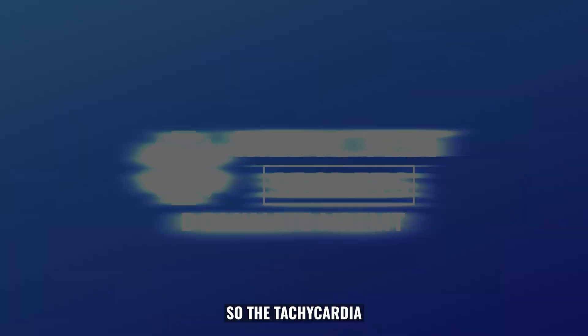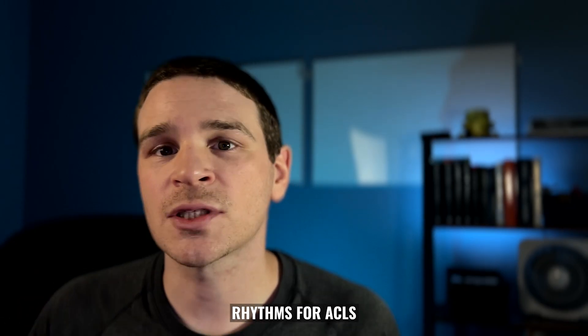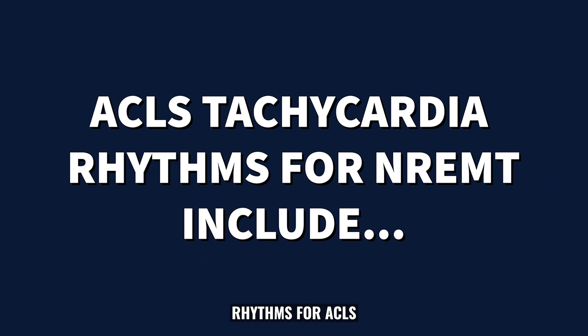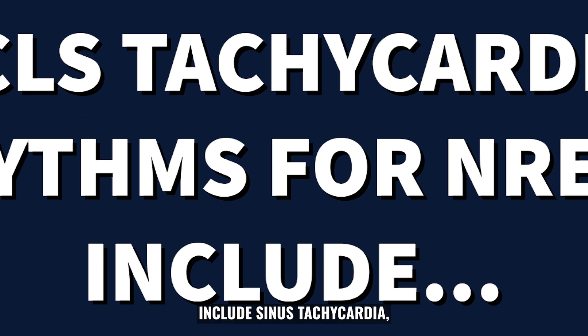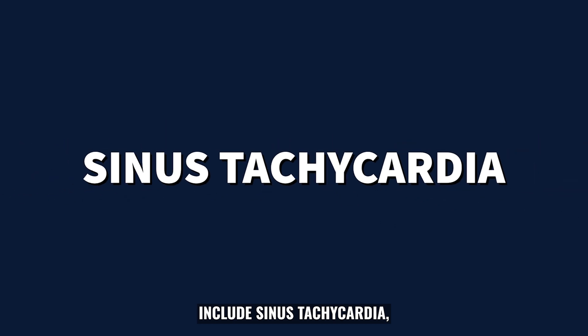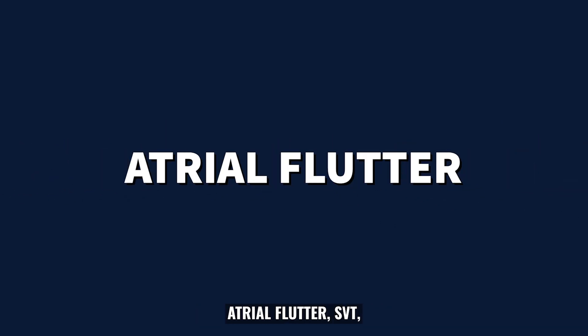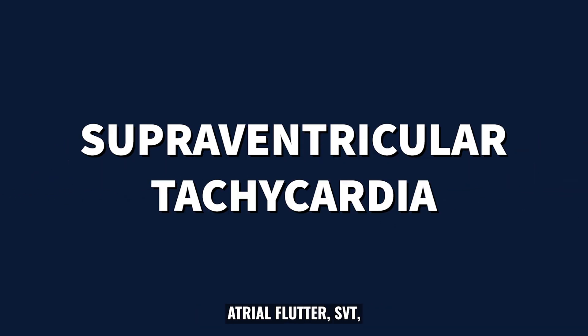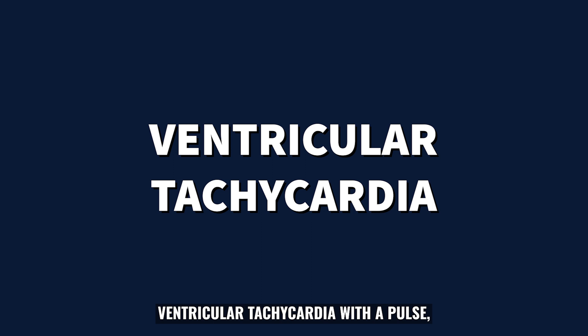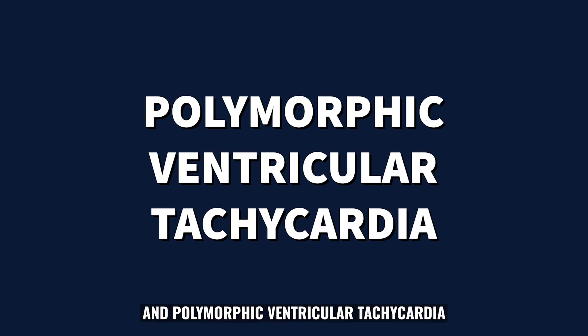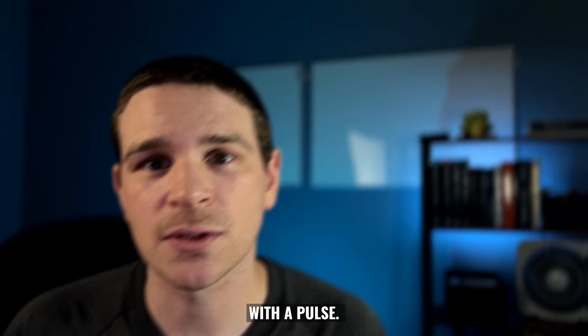The tachycardia rhythms for ACLS include sinus tachycardia, atrial fibrillation, atrial flutter, SVT, ventricular tachycardia with a pulse, and polymorphic ventricular tachycardia with a pulse.